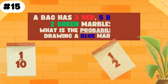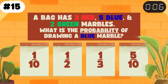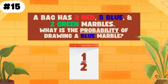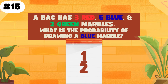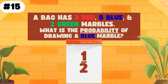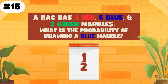A bag has 3 red, 5 blue, and 2 green marbles. What is the probability of picking a blue marble? The answer is 1 half or 50%. Understanding how to calculate basic probability isn't just an academic exercise — it's a practical skill that helps you make better decisions in uncertain situations.